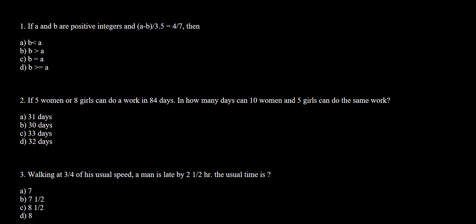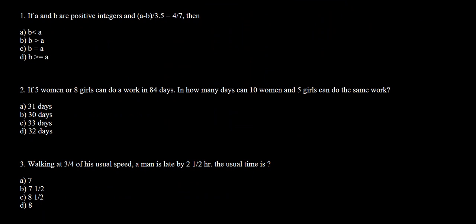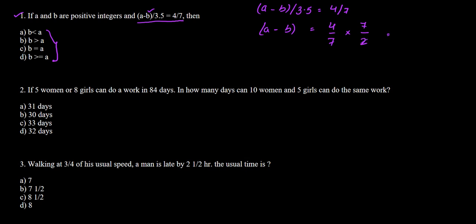Beginning with question number one: if a and b are positive integers and (a minus b) divided by 3.5 is equal to 4 by 7, we have four inequalities in a and b to evaluate. Simplifying this equation, we multiply 3.5 on both sides, giving us 4 by 7 into 7 by 2.